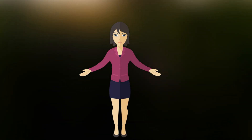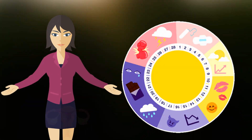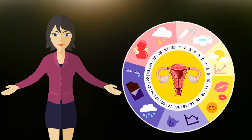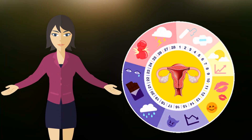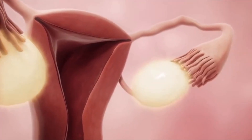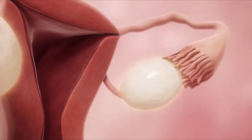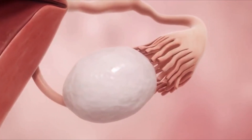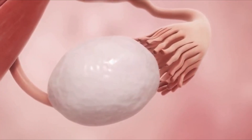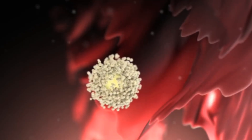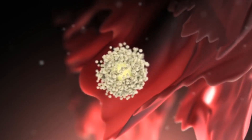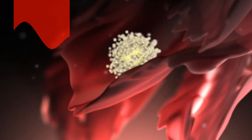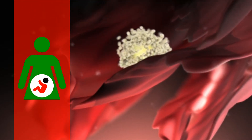Ovulation is a crucial part of the menstrual cycle in females of reproductive age. It is the process where a mature egg is released from one of the ovaries and travels down the fallopian tube. If the egg is fertilized by a sperm cell during this time, women can get pregnant.